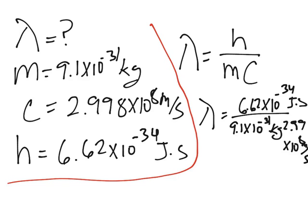So wavelength is right here, 2.43 times 10 to the negative 12 meters, and you can change that into nanometers.